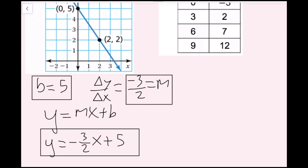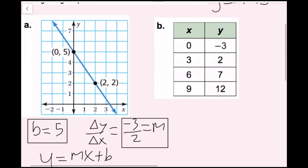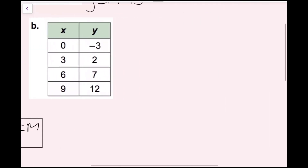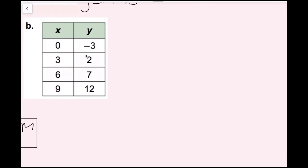For part b, I'm given a table of values where all of these points are on the same line. I want to identify my slope and my y-intercept. We have y equals mx plus b, where m is the slope and b is the y-intercept.